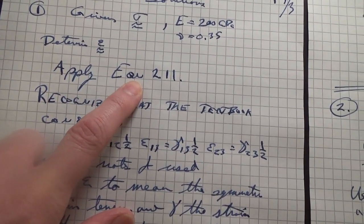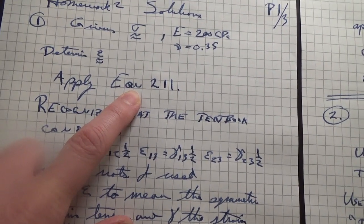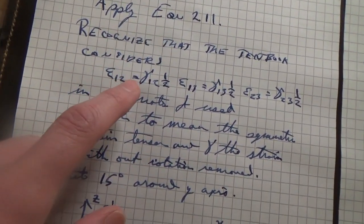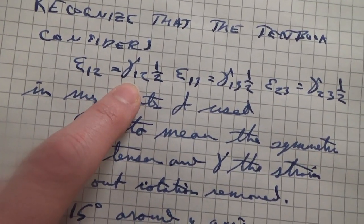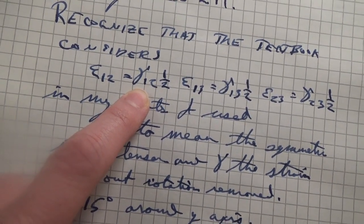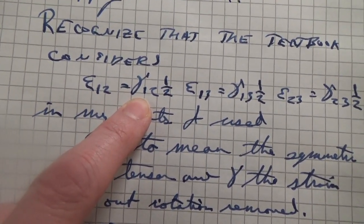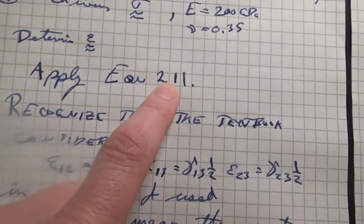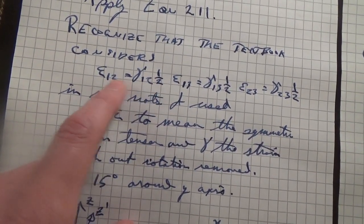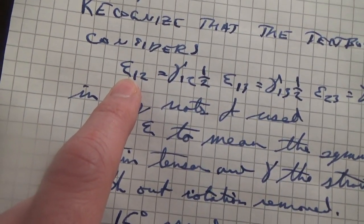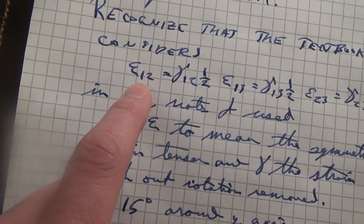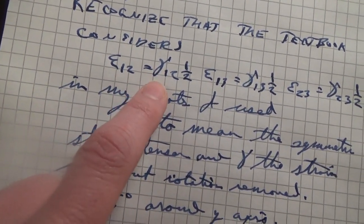For that you apply equation 2.11 from your textbook. An important thing to recognize is that in your textbook they are looking at the strains that contain the rotation. So if you compare equation 2.11 to the equations in my notes, they are off by a factor of one half. And that is because the epsilons that I am using are symmetrized and these are not.